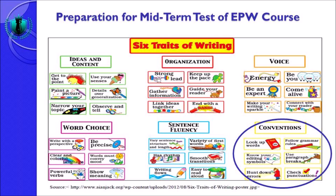Convention juga terdiri atas 6 bagian: look up words, follow grammar rules, know your editing symbols, use paragraph breaks, hunt down errors, dan check punctuation. Convention maksudnya adalah kesepakatan — kalau anda menulis secara akademis berarti tulisan anda harus sepakat dengan makna akademis. Look up words — anda harus lihat kosa kata apa yang digunakan. Kalau kosa katanya harus akademis, berarti pilihlah kosa kata yang akademis.